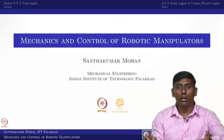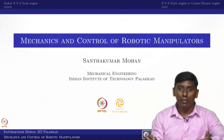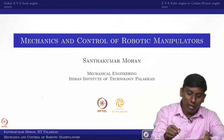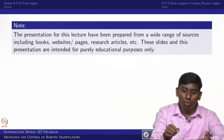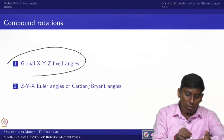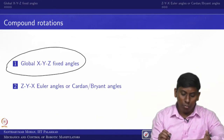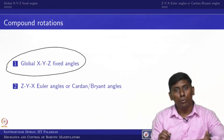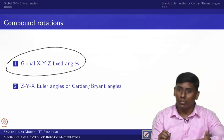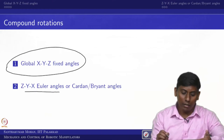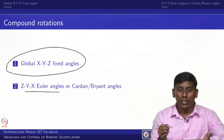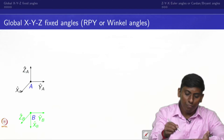The two representations are: one called the Cardan angle, and the other called the Winkle or Bryant angle. Simply put, one is the global fixed representation and the other is the Euler angle. We will cover them one by one.